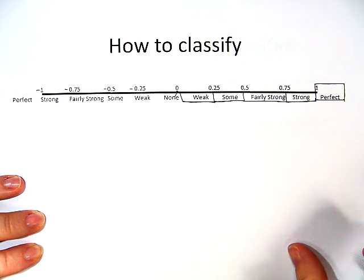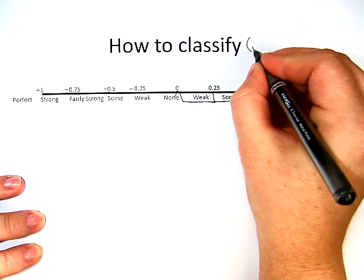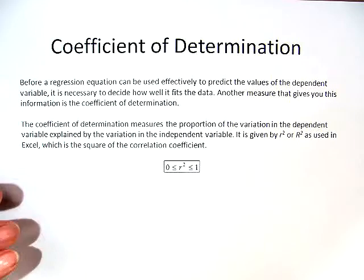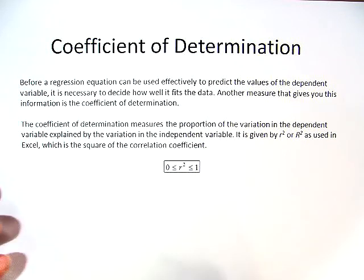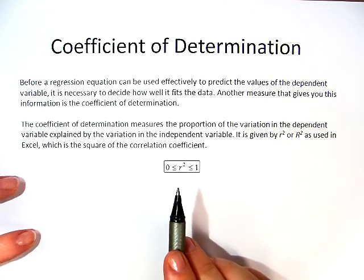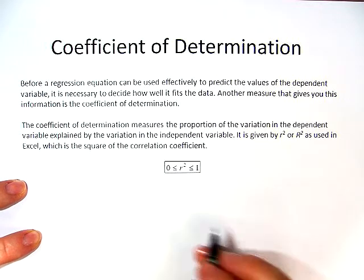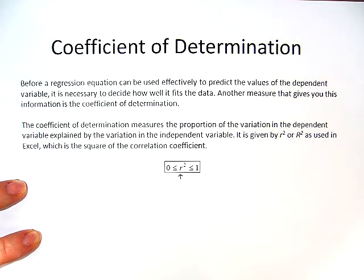And once again, this is how to classify correlation coefficient, meaning our r factor. Now, with coefficient of determination, it is slightly different. Before you can use to predict values, you need to decide how well it actually fits the data. Now, we know that if r fits between negative 1 and positive 1, then r squared would fit between 0 and positive 1.